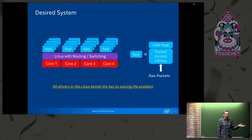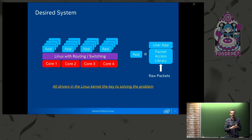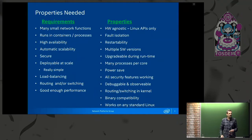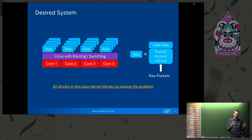The desired system: we have a number of cores, standard Linux on there, and on top of every single core there's one or more processes running — these are our apps, these are the cloud-native network functions. Inside this app there's a user application and on the bottom a packet access library, so think DPDK or VPP or something like that. It just receives raw packets into this process, and the packet access library provides that to the user app. If you put all the drivers inside the Linux kernel, you get all these properties by default — an ordinary process running in Linux has all these properties.